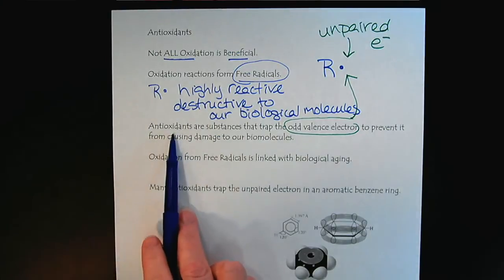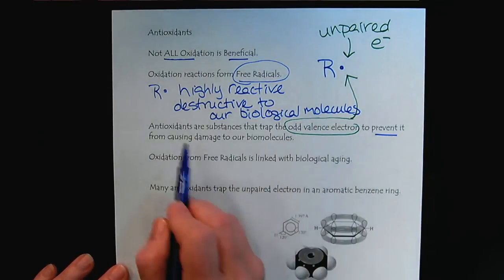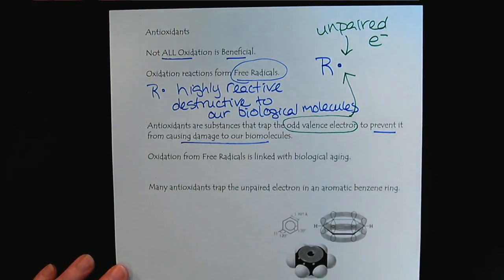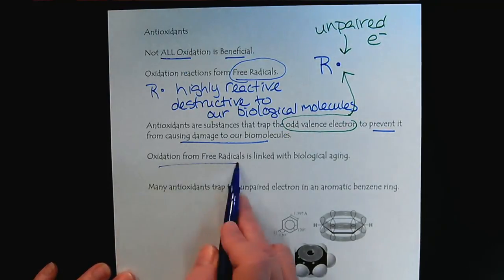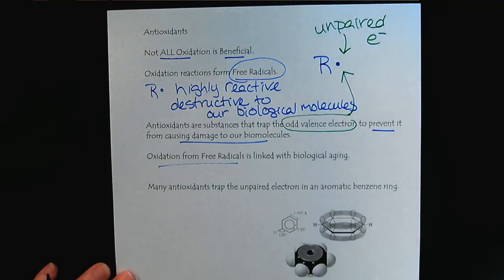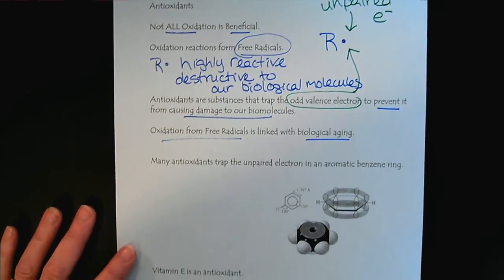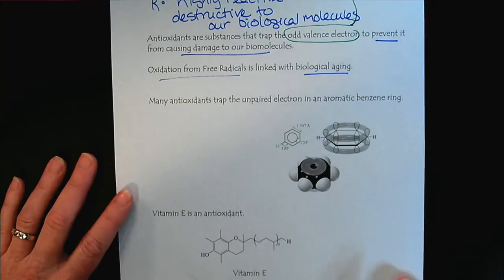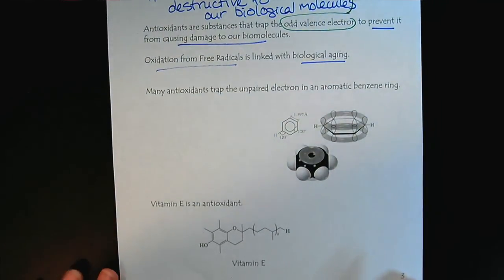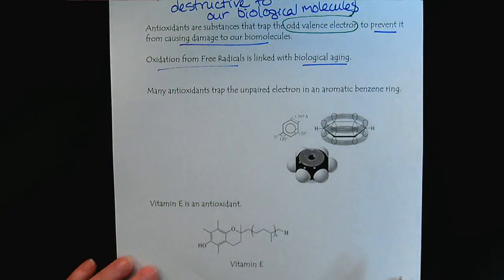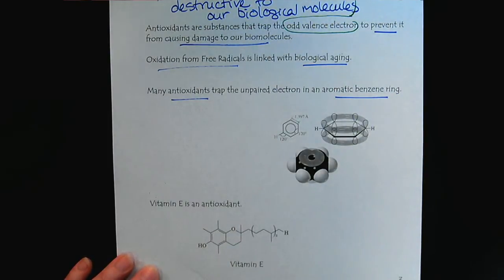Antioxidants are substances that can trap this unpaired valence electron and basically put it on a timeout so we can prevent them from damaging our biomolecules. There's plenty of research out there that shows that oxidation from free radicals is linked to biological aging. The aging process is the degeneration of our biochemistry. It's very interesting to look at the common structural features of antioxidants, and many of them use the aromatic benzene ring to trap the radical.